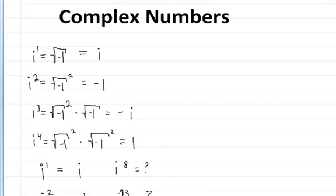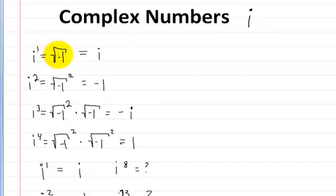This video is on complex numbers. We start by asking: what is i? Because imaginary numbers always have this i in them. i is defined as the square root of negative 1. It's been designated as that value, so that's what it is.